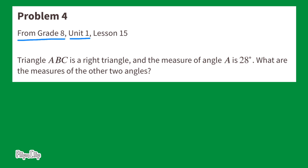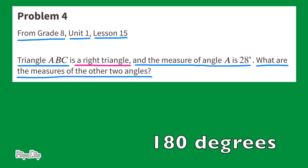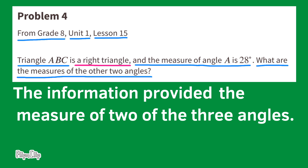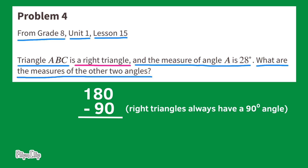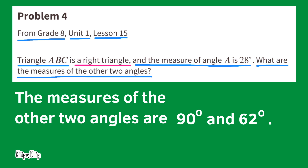Problem number 4, from 8th grade Unit 1, Lesson 15. Triangle ABC is a right triangle and the measure of angle A is 28 degrees. What are the measures of the other two angles? The sum of all three angles in every triangle totals 180 degrees. Since it's a right triangle, we know one angle is 90 degrees. 180 minus 90 leaves 90 degrees. Subtracting the 28 degree angle: 90 minus 28 equals 62 degrees. So the measures of the other two angles are 90 degrees and 62 degrees.